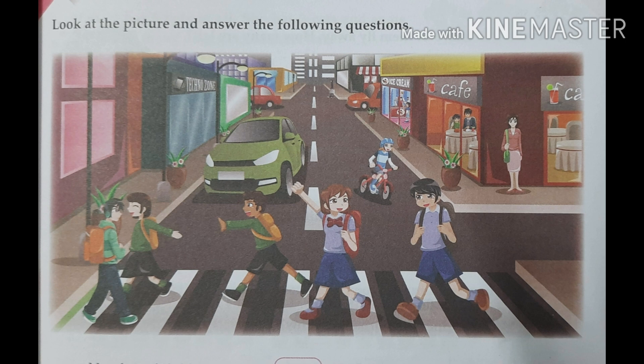I can see a picture of a road, no? Busy road. There are some children, cars, shops are also there. And what is this called, you know? These white and black lines. This is called zebra crossing. Yes.